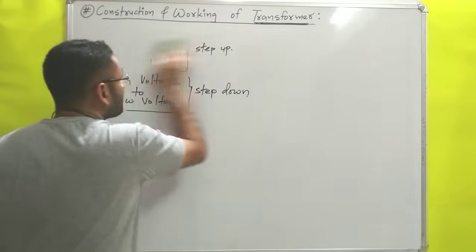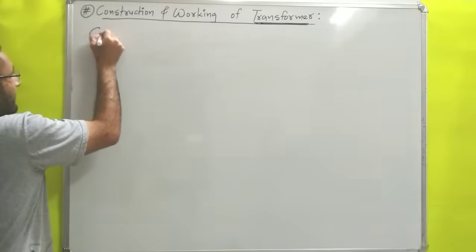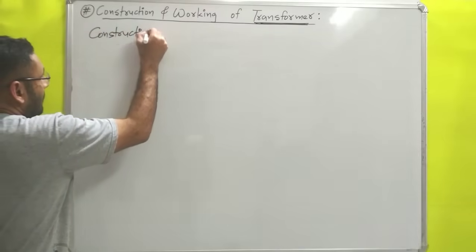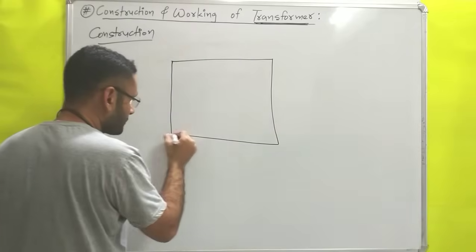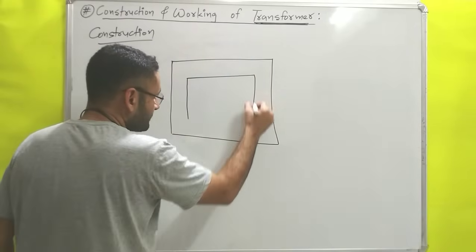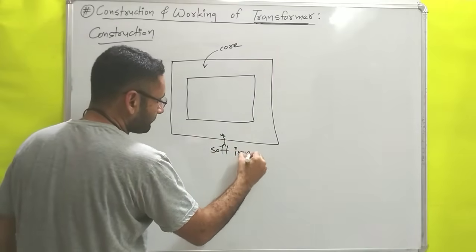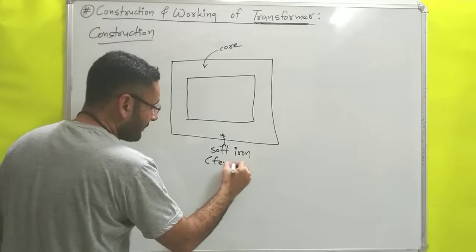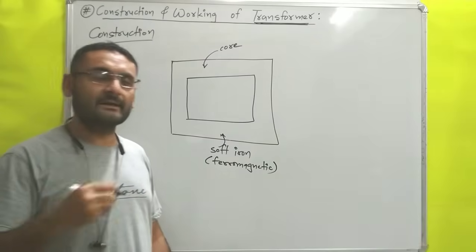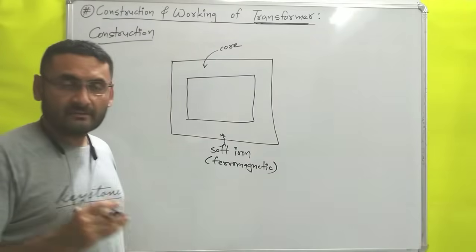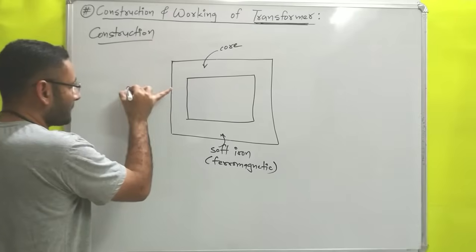Now we will talk about the construction of the transformer — which parts are there and what are their functions. For construction, we will draw the figure. It has one core, and that core is made with the help of soft iron. That soft iron is a ferromagnetic material. We will take one insulated copper wire and that wire will be wound on one side of the core.